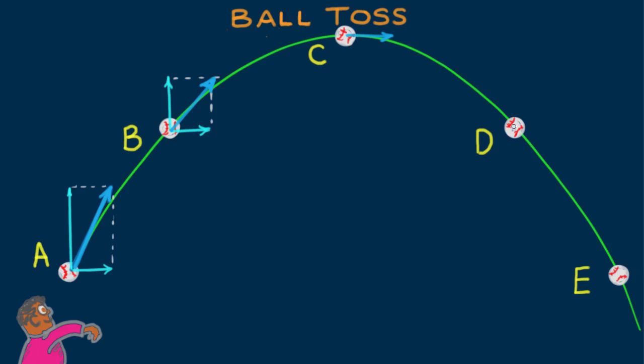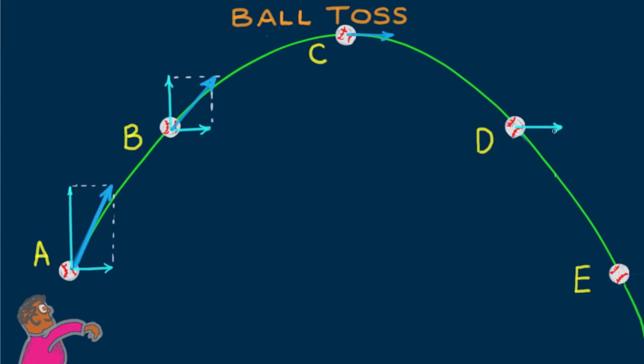At position D, we have much the situation as in B. Same size horizontal component, but with the vertical component directed downward. So the resultant of these components gives the velocity vector at D. Notice sort of an upside-down image of the situation at position B.